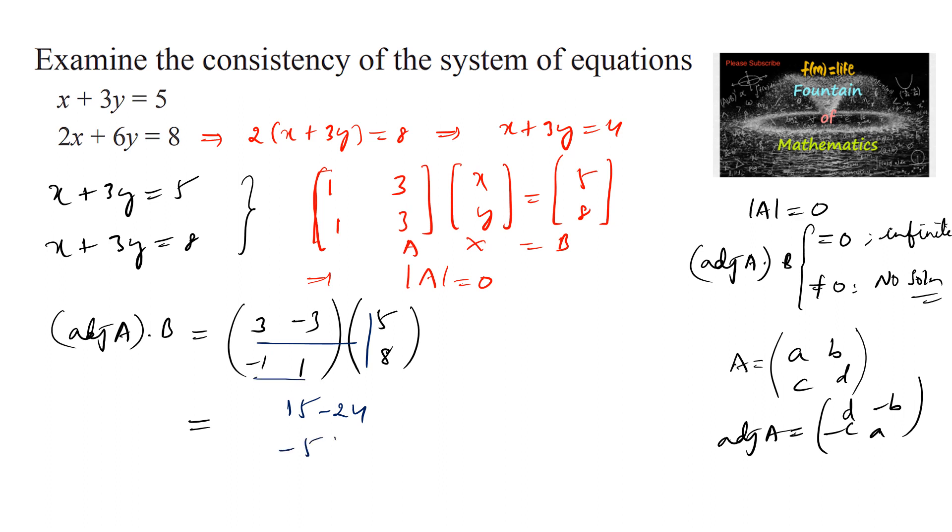Minus 1 into 5 is negative 5, plus 8 which equals minus. Here we can write 15 minus 24 is negative 9, and 8 minus 5 is 3, which is not equal to the 0 matrix.